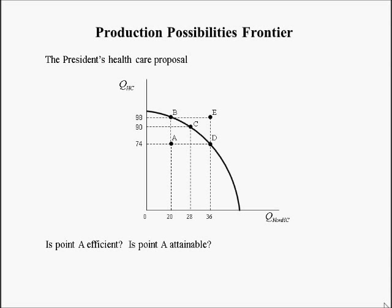Let's take the president's healthcare proposal as an example. The production possibility frontier models our economy's decision to produce all other goods on the x-axis and healthcare on the y-axis. The first question is: is point A efficient? Is point A attainable? Point A is not efficient because it lies inside the PPF — kind of like where we were circa 2009-2010, when unemployment was high. When the PPF models the economy and unemployment is high, you're at a point like A.